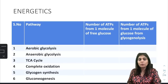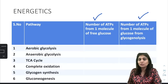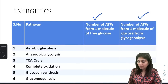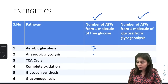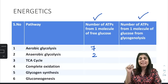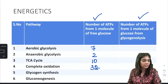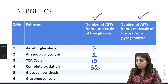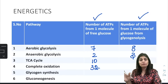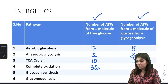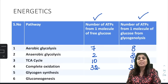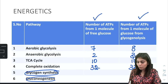Tabular summary of ATP yields: For free glucose — aerobic glycolysis: 7 ATPs; anaerobic glycolysis: 2 ATPs; every citric acid cycle gives 10 ATPs; complete oxidation: 32 ATPs. For glycogenolysis glucose — aerobic glycolysis: 8 ATPs; anaerobic glycolysis: 3 ATPs; citric acid cycle: 10 ATPs regardless of source; complete oxidation: 33 ATPs.